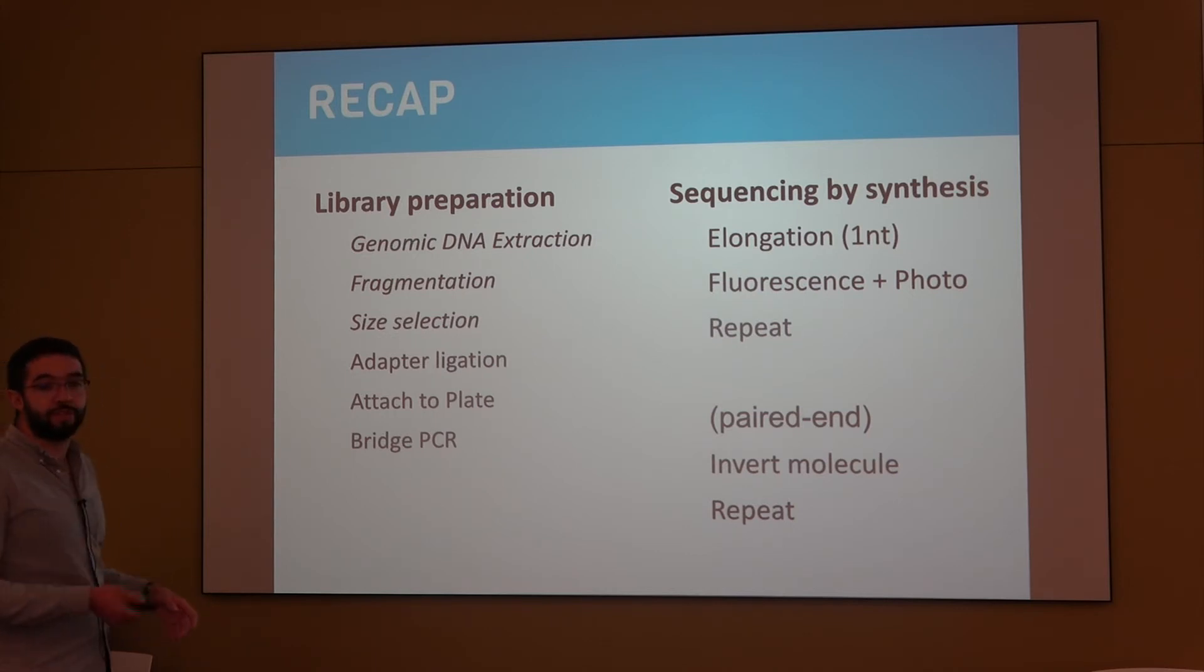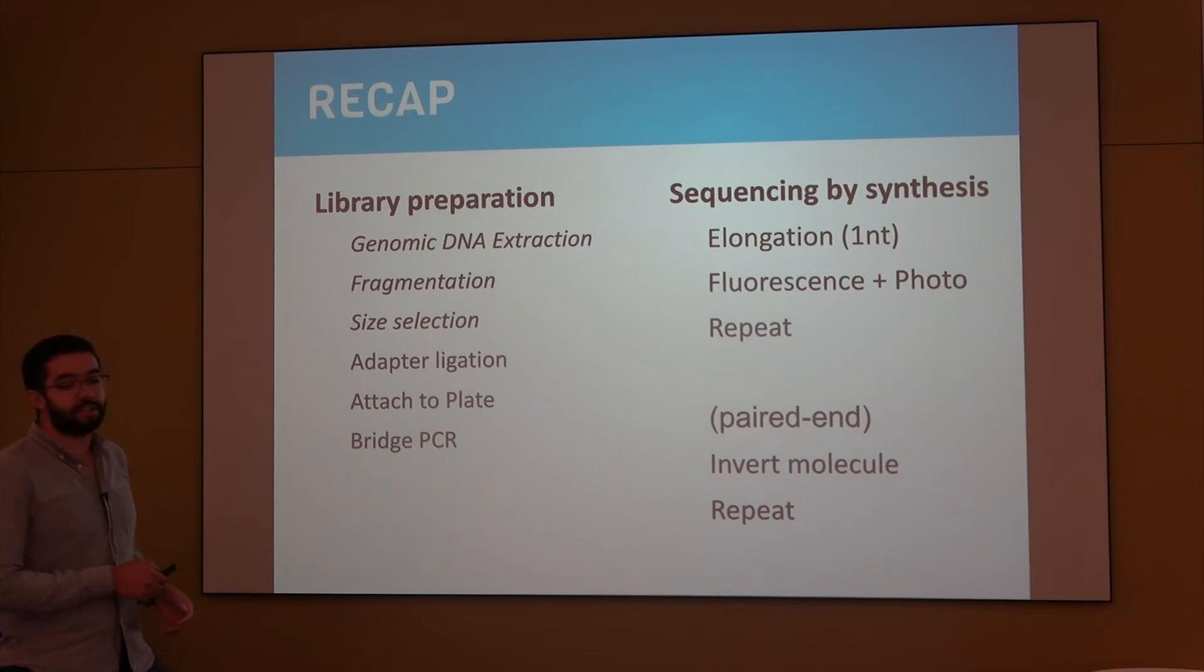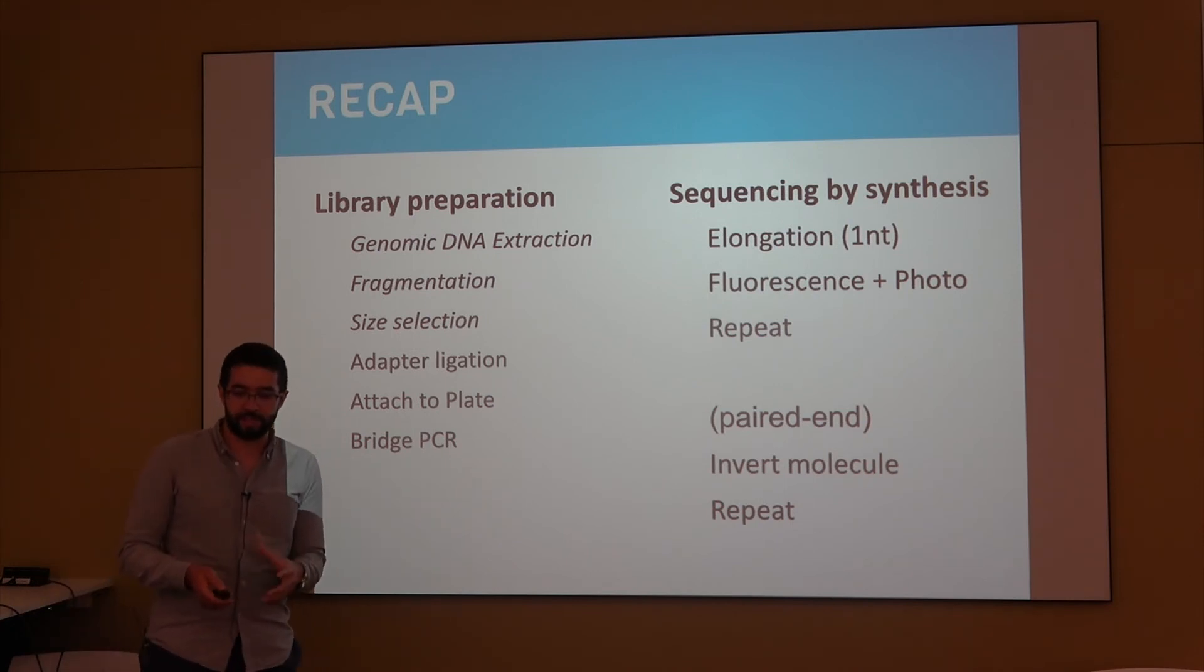First is extraction of DNA from the cells, and there's different ways to do that. Some of them are better for the process. Then there's fragmentation, so DNA comes in these very large molecules which have to be broken in smaller sizes. Then there's a size selection, because we're interested in only having sizes around 500 nucleotides, although there's different protocols that might change this. Then adapter ligation, then attaching to a plate, and doing the bridge PCR to increase the intensity of the signal.